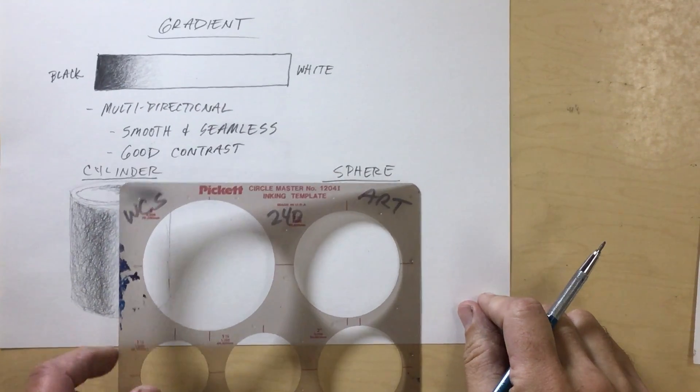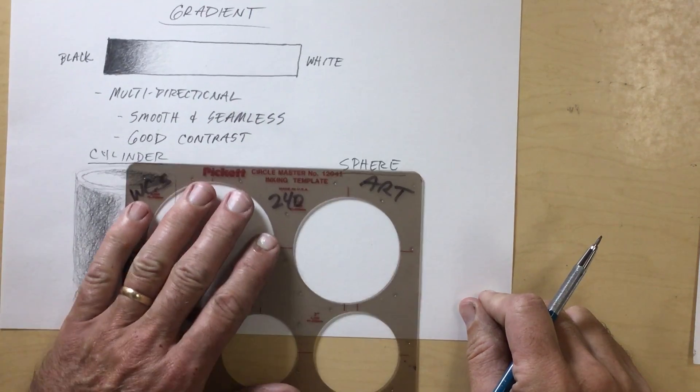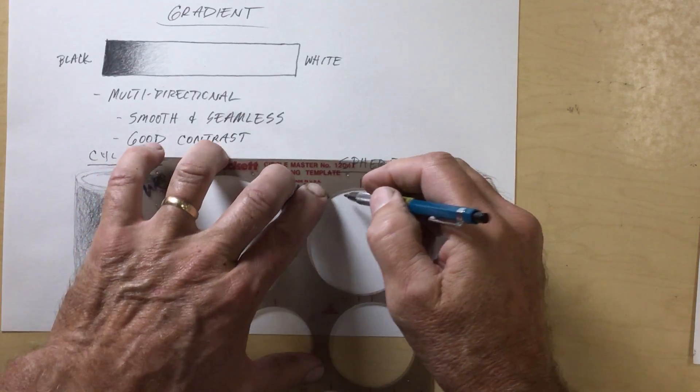Lastly, we're going to do shading or modeling on a sphere. So first we have to draw ourselves a circle. I'm going to use this circle template.